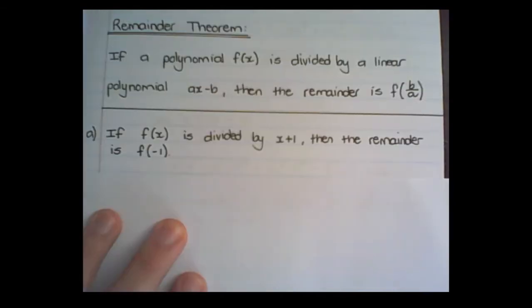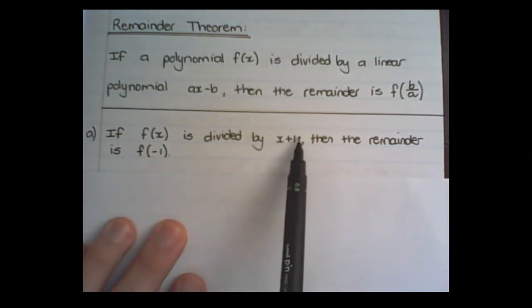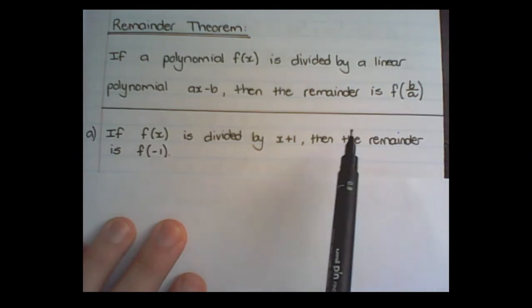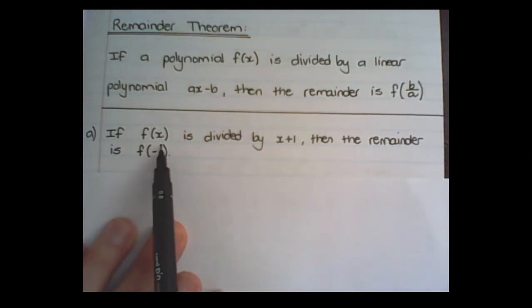So the remainder theorem applied is I have fx, some sort of expression, and let's say I divide it by x plus 1. Then the remainder would be f of negative 1. So in the place of x, I replace it with negative 1.